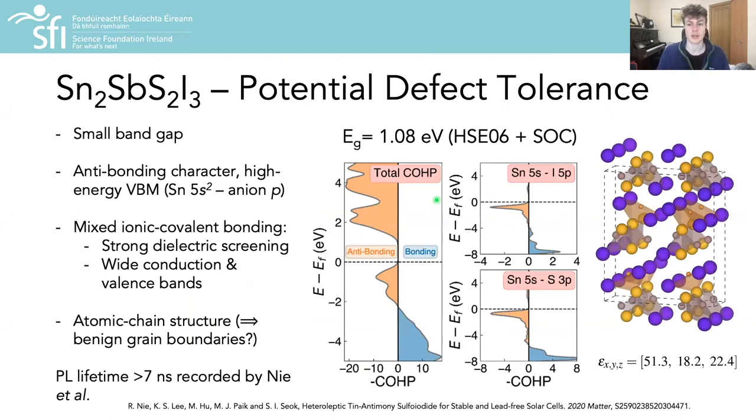Thinking about the potential defect tolerance of this material, we identify several material properties that could promote this behavior, such as a small electronic band gap, an anti-bonding character high-energy valence band maximum due to the interaction of the tin 5S² lone pair with both the iodine and sulfur P states at the top of the VBM. We find mixed ionic-covalent bonding and thus strong dielectric screening, which as mentioned before can reduce the interaction of mobile charge carriers with charged defects and thus reduce non-radiative recombination in the material, as well as wide conduction and valence bands. Additionally, the atomic chain structure of this material along these stoichiometric chains along the A direction could result in benign grain boundaries with no broken bonds and thus minimal recombination activity, as has been noted in antimony selenide for example.